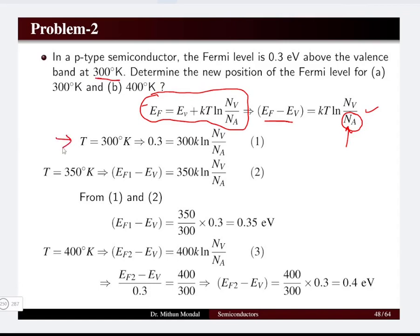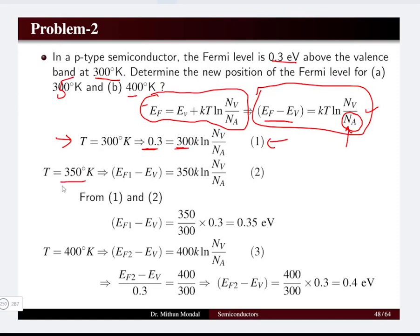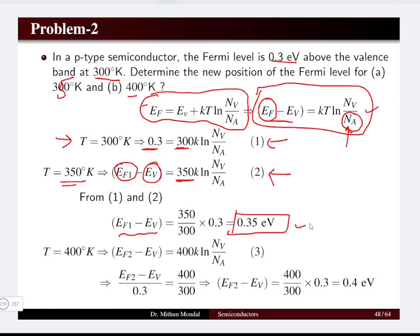At 300 K, the Fermi level is 0.3 eV above the valence band, which we substitute into the equation to form the first equation. At 350 K, we have a new Fermi level Ef1. Setting up the equation for T = 350 K and dividing by the equation at 300 K using the ratio-proportion method, we find Ef1 − Ev = 0.35 electron volts. This is the new Fermi level position at 350 K.